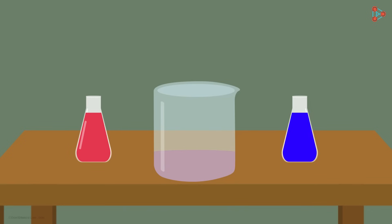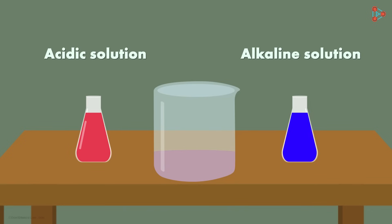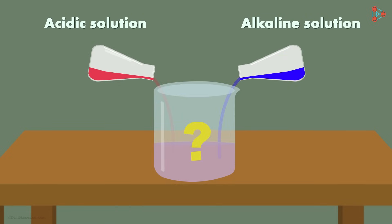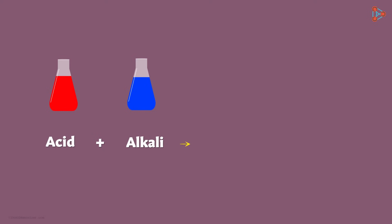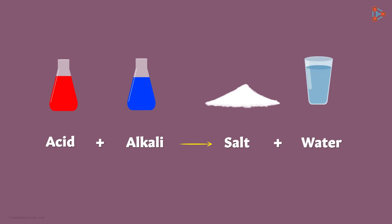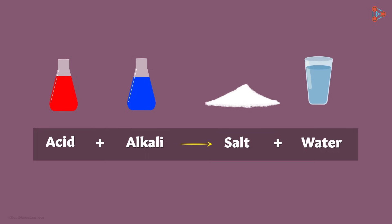If we take two solutions, one acidic and the other alkaline, and mix them, what will be the result? By now, you should be able to answer that it will give us a salt, and water will be released as a by-product. Now, does this happen every time? Will an acid and an alkali always give us salt and water? Yes, it will always be like this. An acid when combined with a base will always give us salt and water.